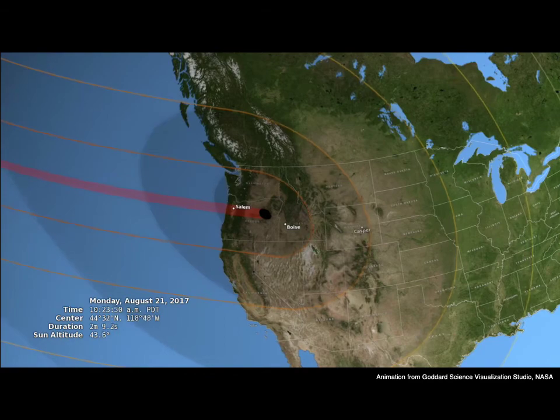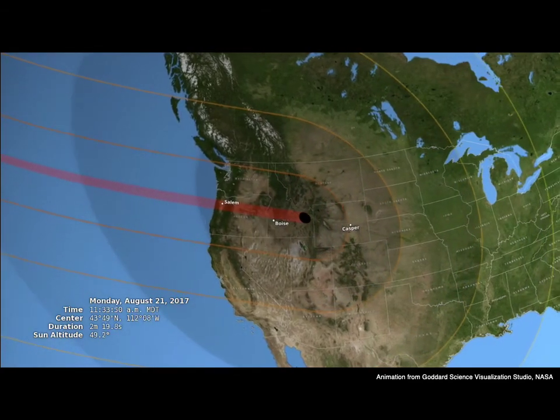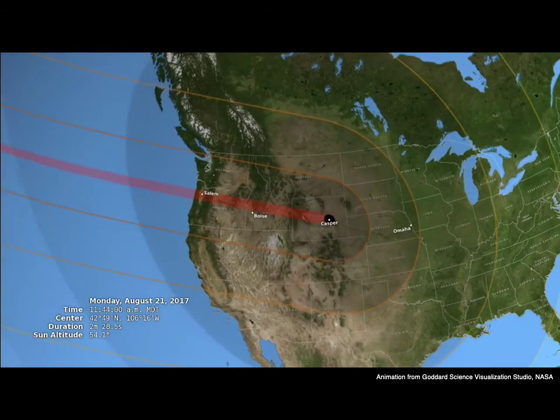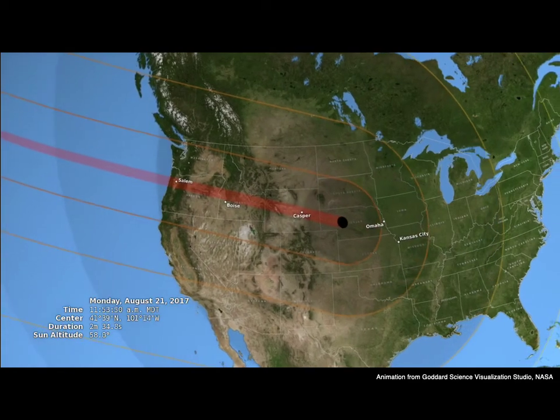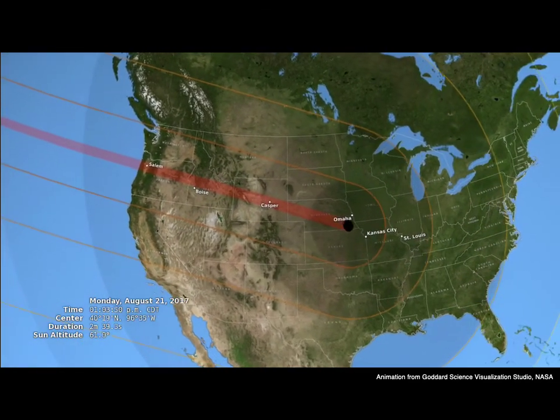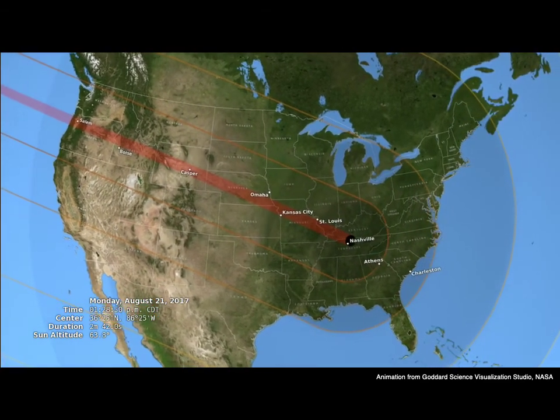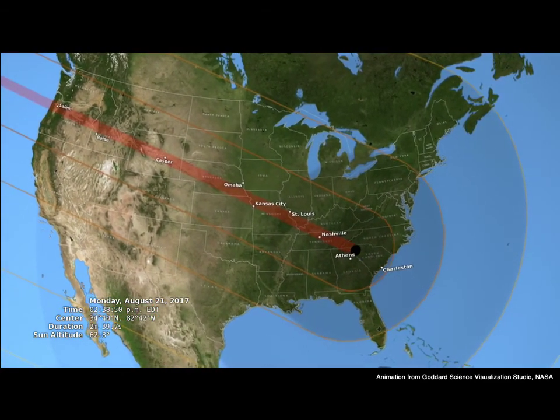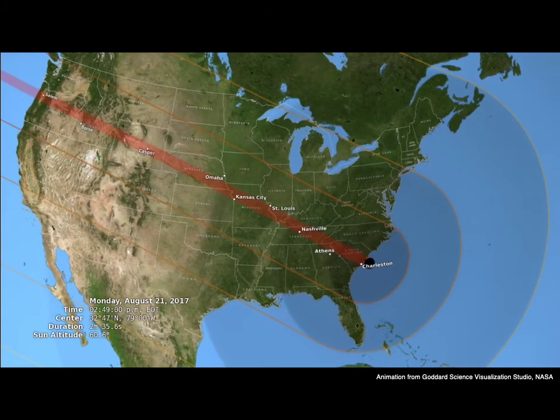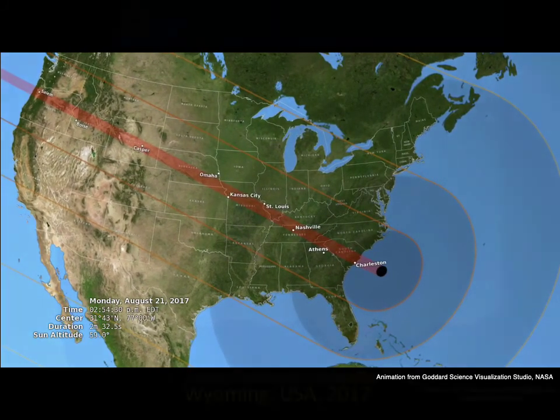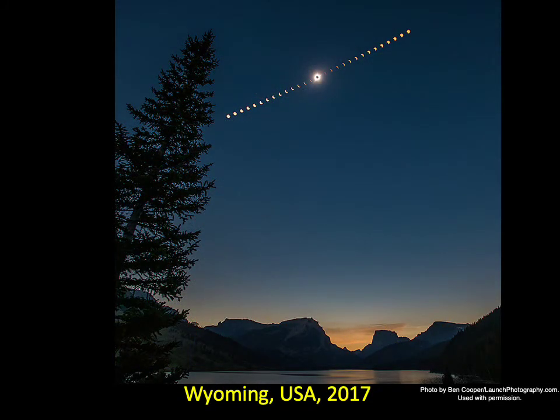Moreover, the Moon's motion along its orbit causes its shadow to move from west to east across our planet, as shown here for the 2017 total solar eclipse. The central black dot represents the total shadow in which totality is occurring, while the surrounding regions are in partial eclipse, with less of the Sun blocked as you move farther from the total shadow.